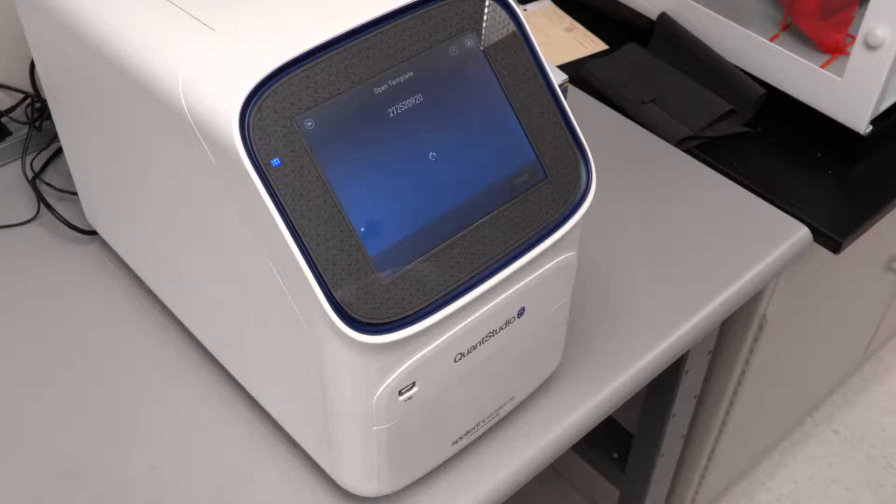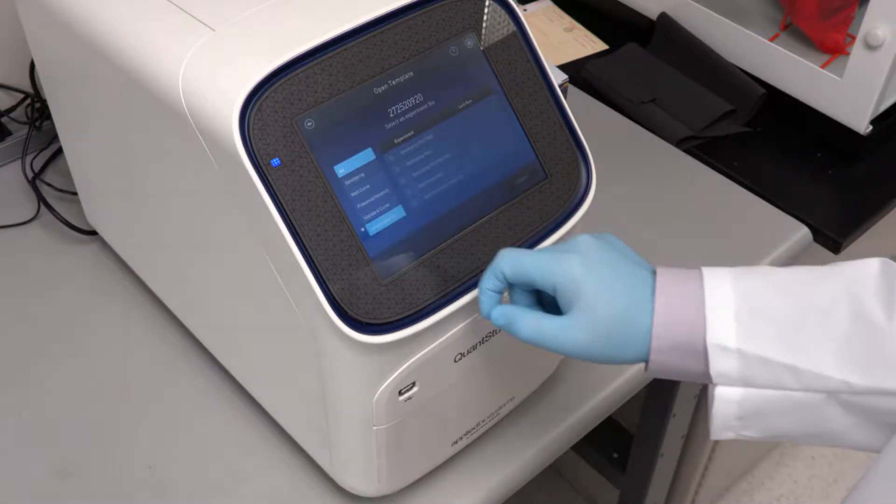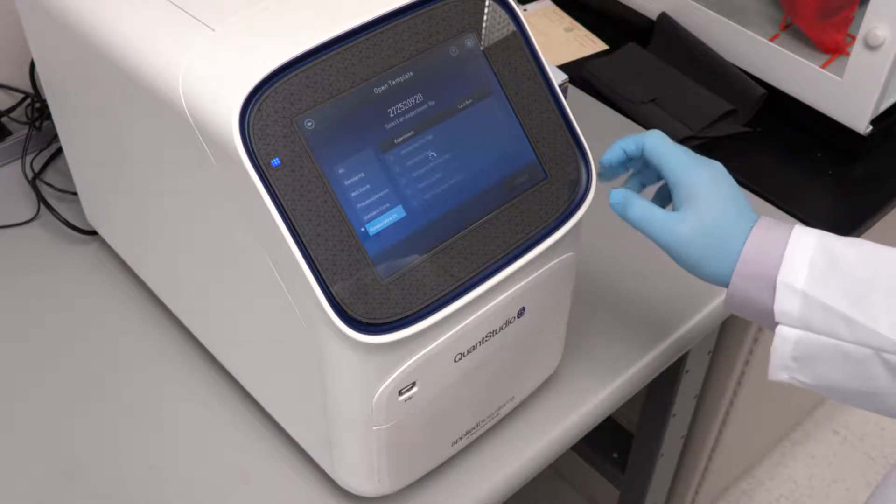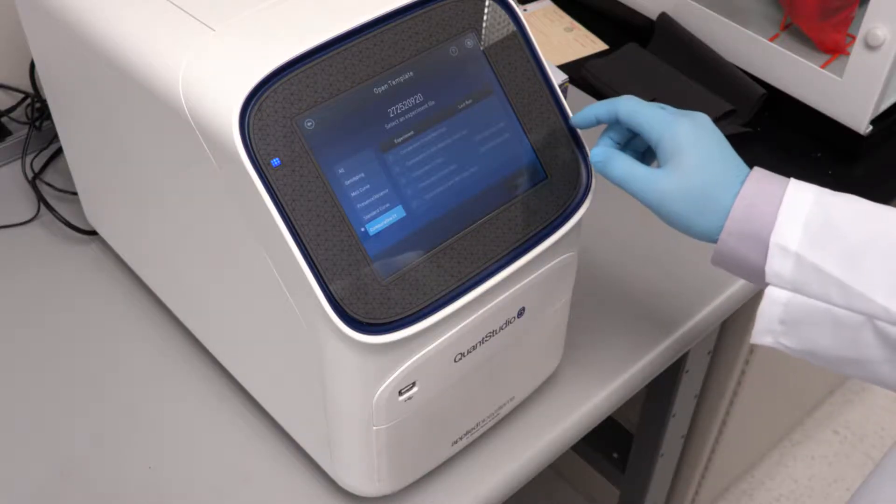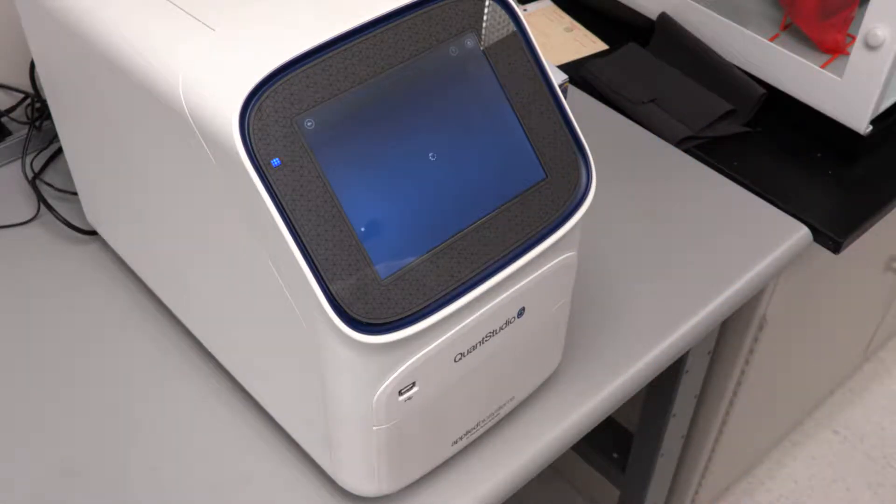Using a combination of the NanoDrop 1 spectrophotometer and Qubit 4 fluorometer gives researchers the most complete picture about their input RNA quantity, purity, and integrity. The MIQE guidelines require all three characteristics to be determined and reported for publication.